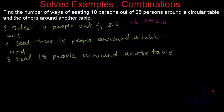And seat these 10 people around a table. The number of ways in which these 10 people can occupy the space around a table is actually 10 minus 1 factorial.